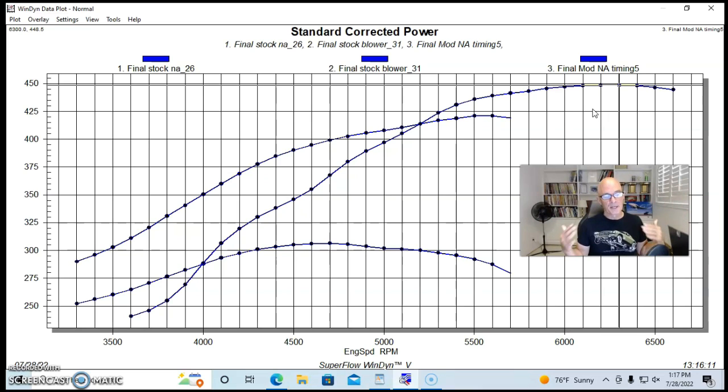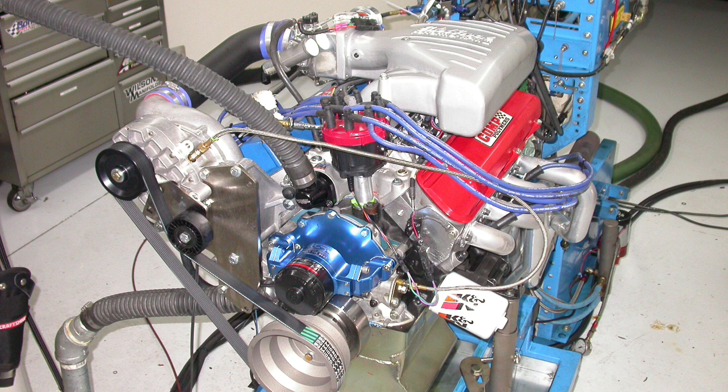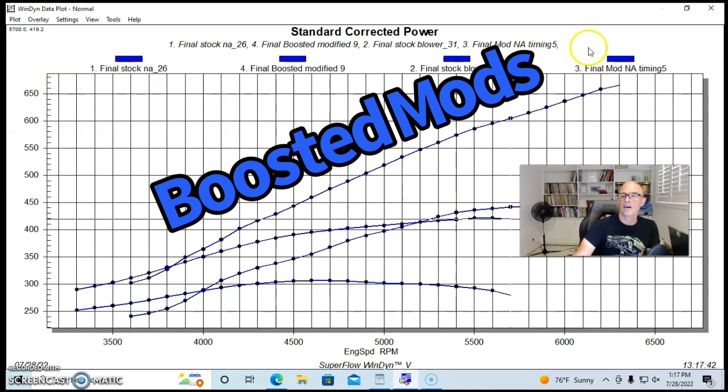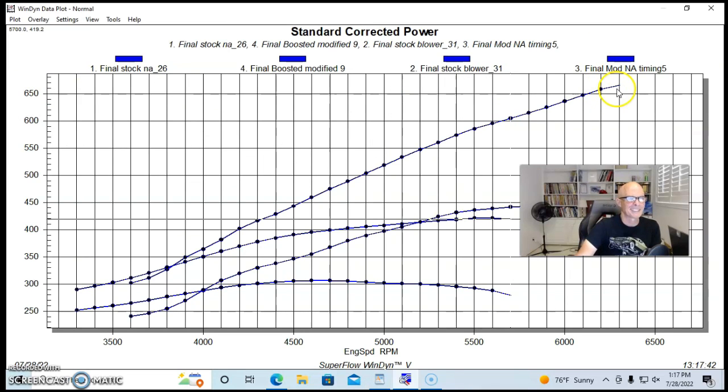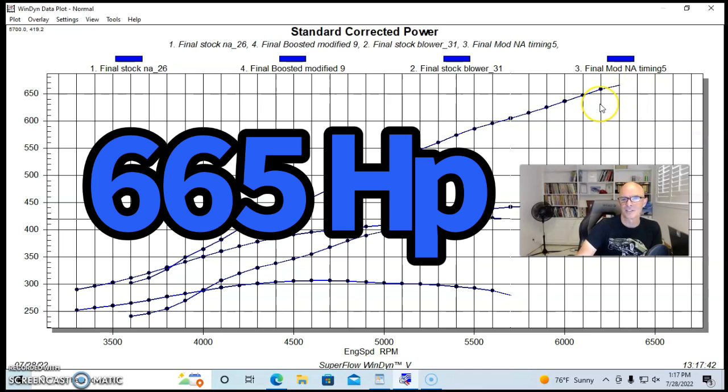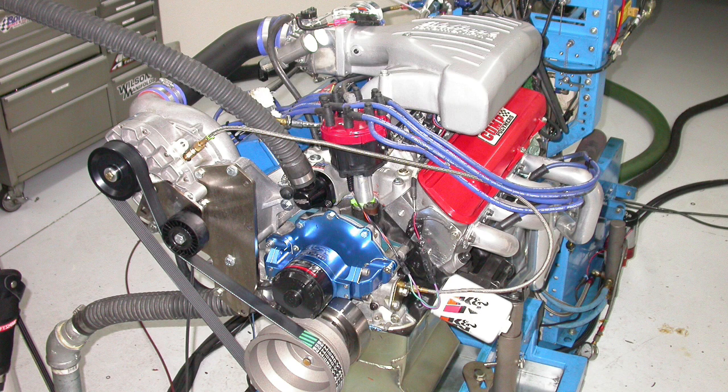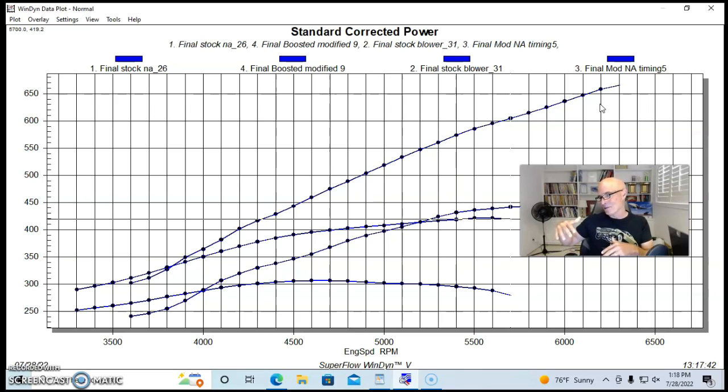The final question is, what happens if we add boost to our now modified 347? Shouldn't we make even more power? The answer is yes, you should and you will. Here's what happens when you add boost to the modified version. Look at that, all kinds of power - it made 665 horsepower. We're making a lot more power because now we're adding boost to a modified combination.